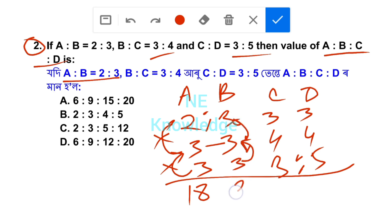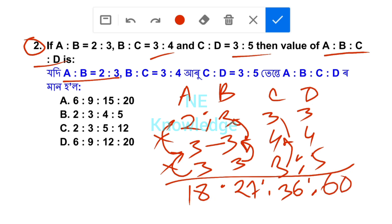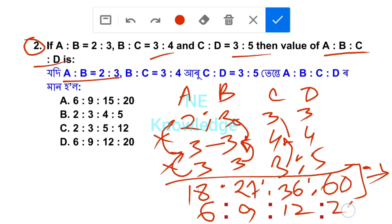9 x 3 is 27. Next, 3 x 4 is 12, 12 x 3 is 36. Next, 5 x 4 is 20, 20 x 3 is 60. Next, 5 x 4 is 20, 20 x 3 is 30. Next, 5 x 4 is 3, 20 x 3 is 30.